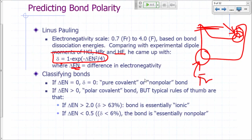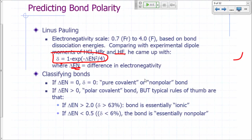And you can calculate the partial charge, your ionic character, as 1 minus e to the minus delta EN squared over 4. So you can classify bonds as polar or nonpolar depending on the difference in the electronegativities.